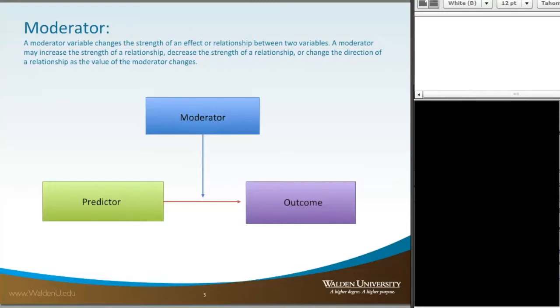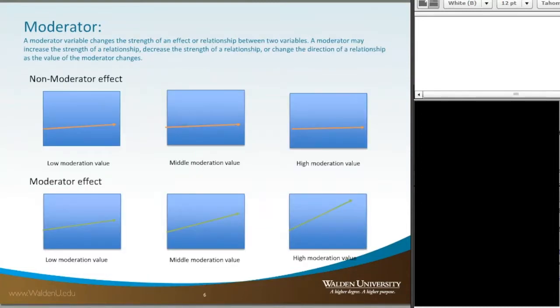When we look at the effect on the top row of little blue boxes, for a non-moderator effect, when the moderator itself has a low value on a continuous scale, our slope, shown here in the orange arrow, has a slight rise to it. At the middle value, we still maintain the same rise, and at the high value, we still have about the same rise - not much change.